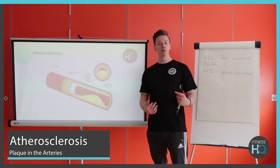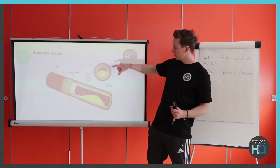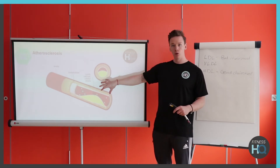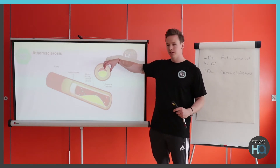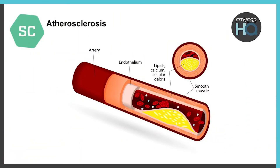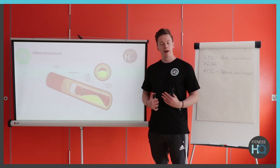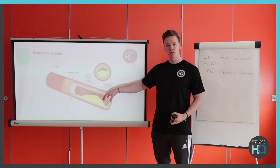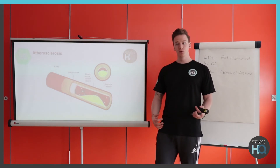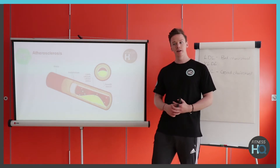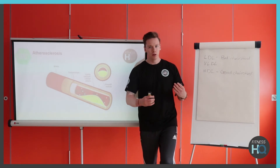Going back to mineral deposits in the arteries, one of the arterial diseases we can get is called atherosclerosis. As you can see from the diagram, inside the walls of the artery there's a buildup of fats, minerals, and proteins, and the actual area inside gets less and less. The amount of blood able to pass through is naturally going to be restricted. Atherosclerosis links into things like coronary heart disease, ischemia, and potential myocardial infarctions — largely due to poor diet and a lack of activity.